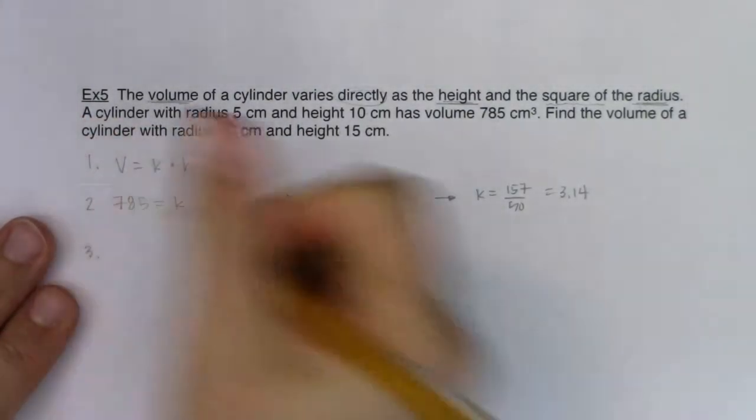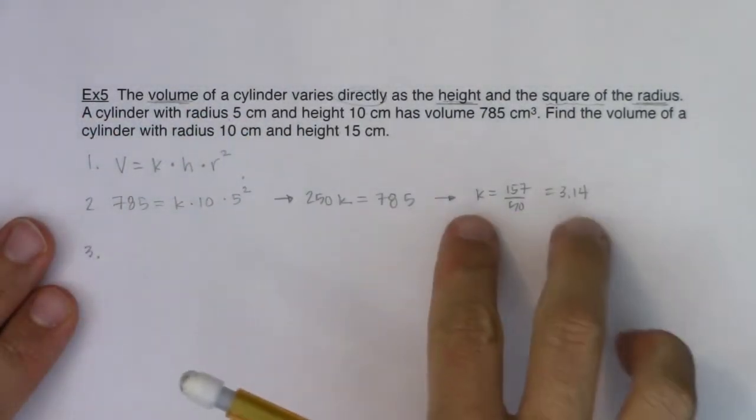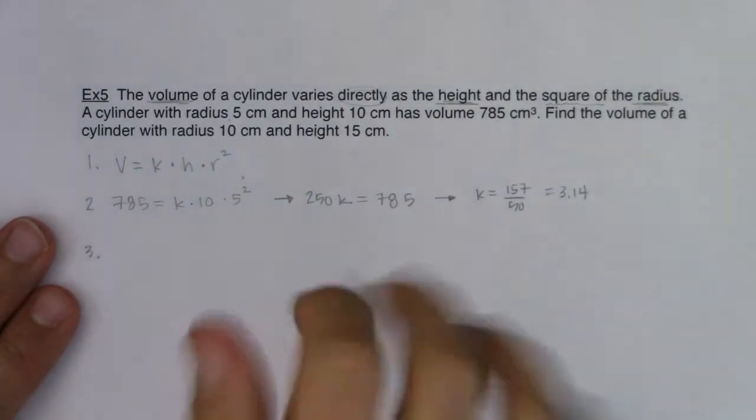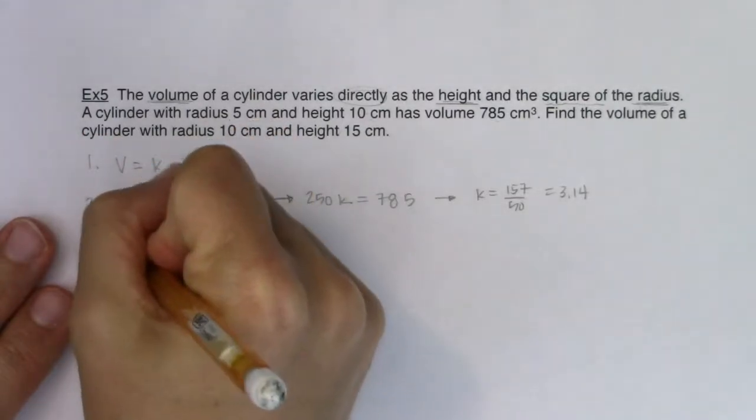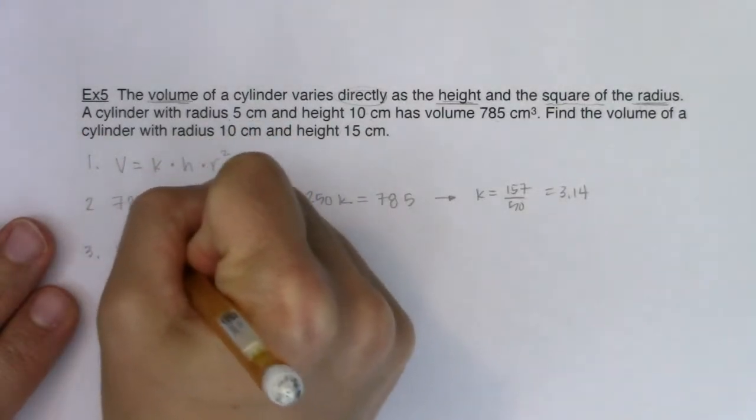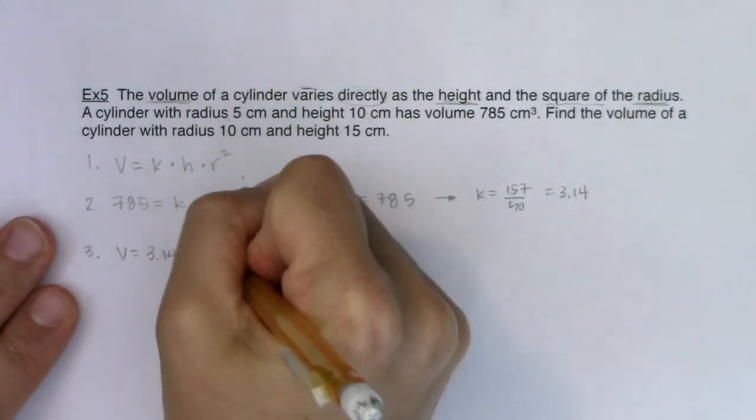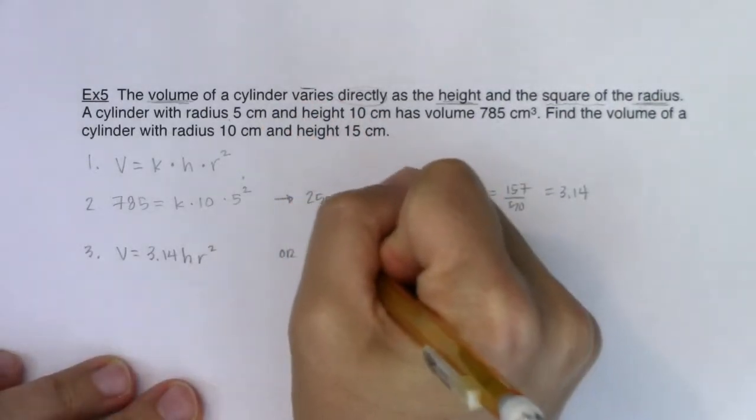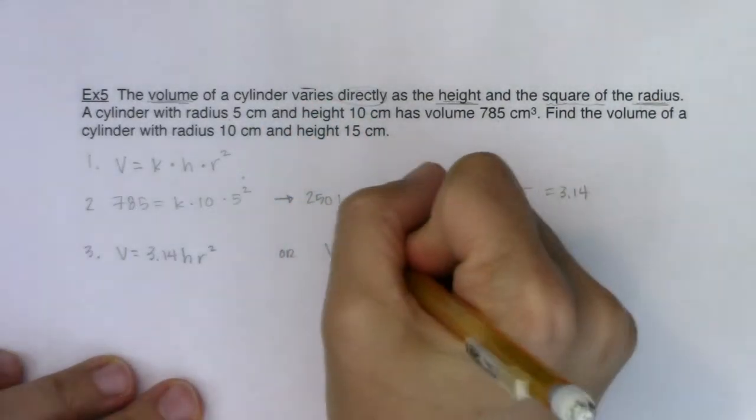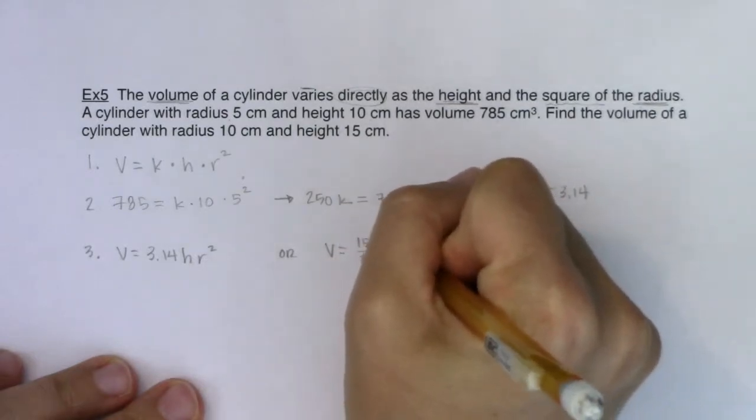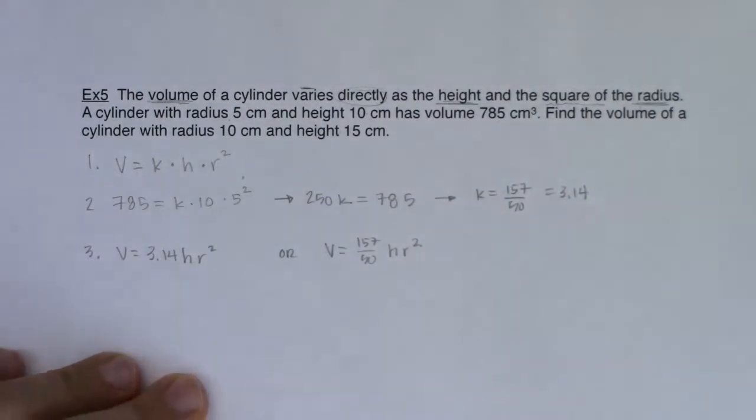Step 3 would say take your value of K that you found in step 2 and plug it into your original formula. So let me do this both ways. If you're really into using decimals, you could say V was 3.14 Hr squared. Or if you wanted to, I would say K was 157 over 50 Hr squared. Either of those are completely acceptable answers.